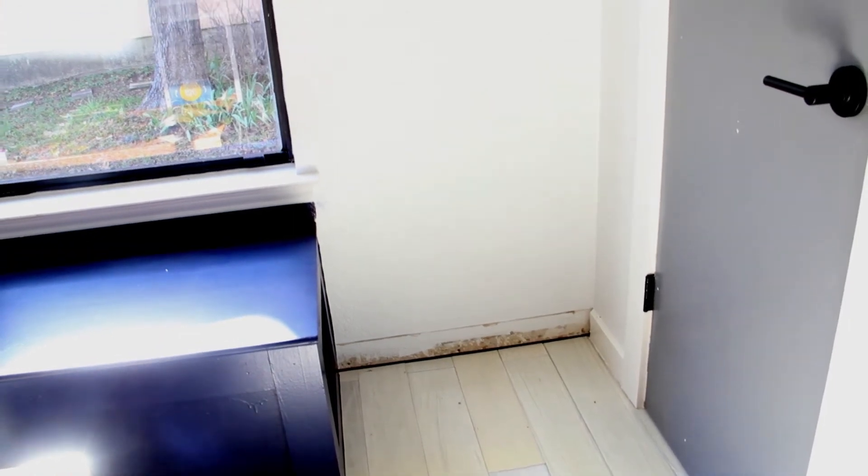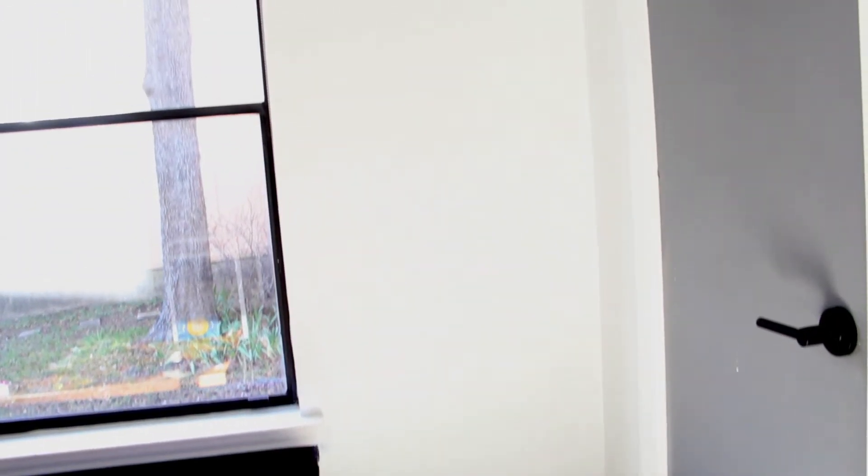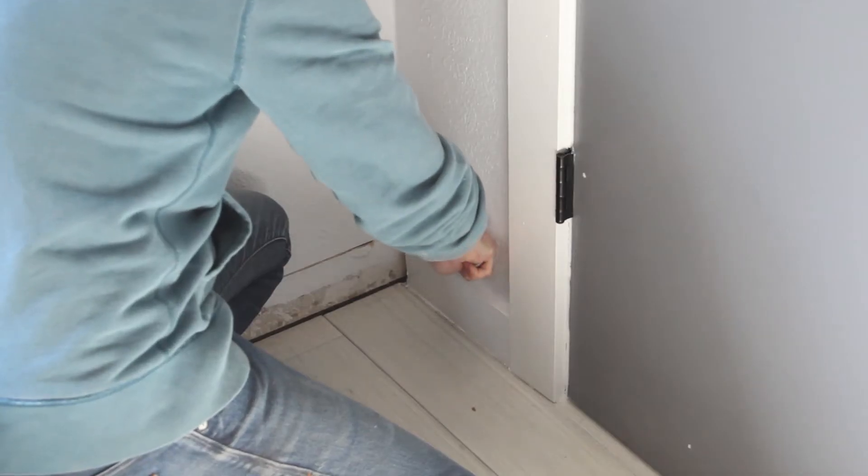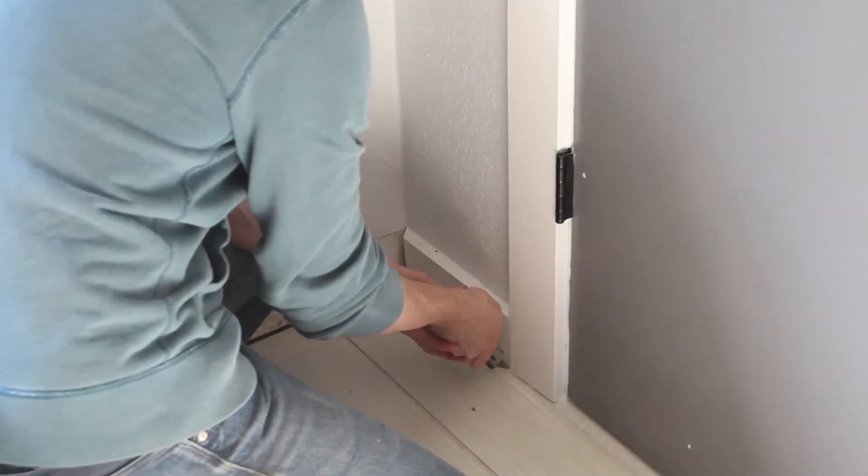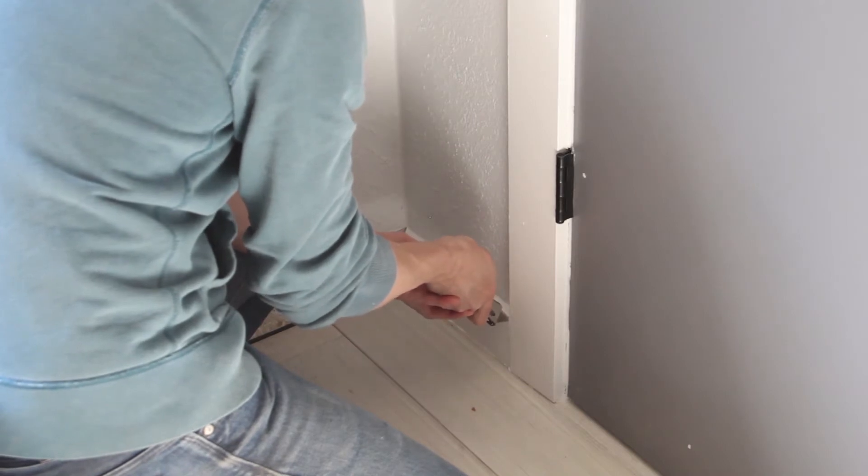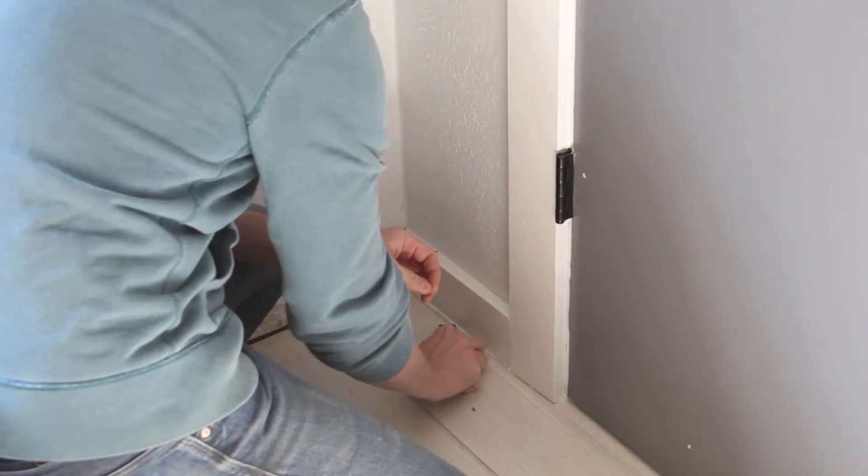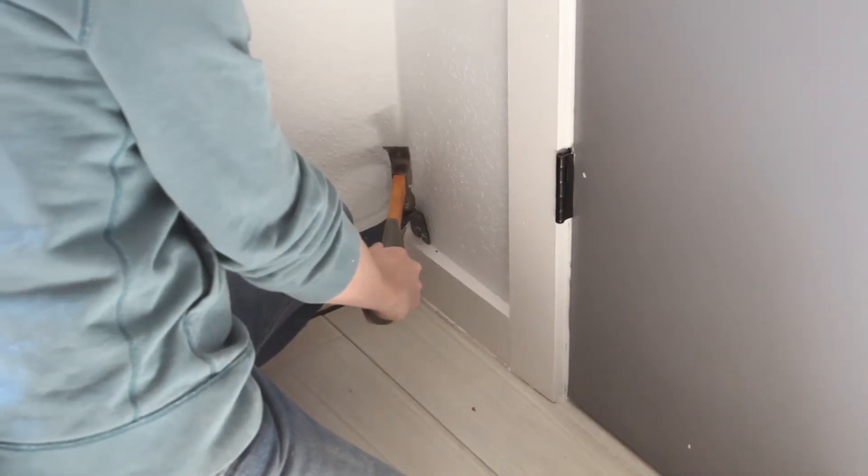All right, here we are in the kitchen and this is the space this little shelf has to squeeze into. You can see I've already removed the baseboard along the back wall to install the banquette, which you can witness in all its glory in my last video. But for now I'm just going to remove this last piece of the baseboard to make space for the shelf.